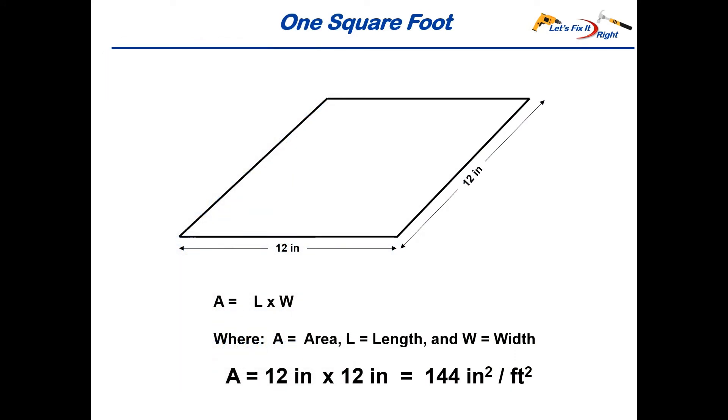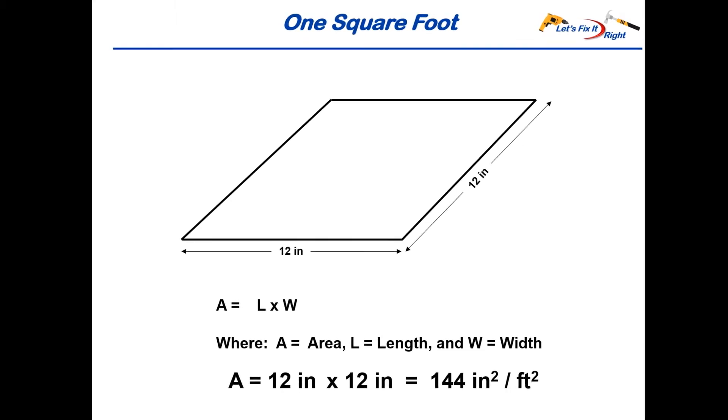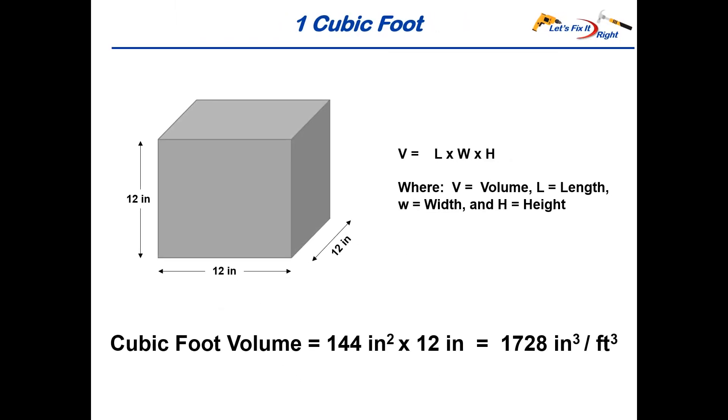Most people know that one square foot with its 12 inch sides equals 144 square inches. When adding a third 12 inch dimension to expand it to a cubic foot, we get a total of 1728 cubic inches. In other words, there are 1728 cubic inches in one cubic foot. As we move forward, this will be a key conversion factor in all of our concrete calculations.